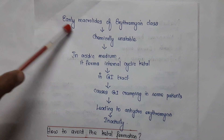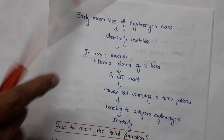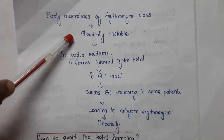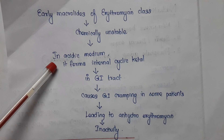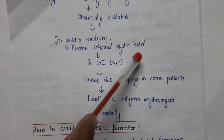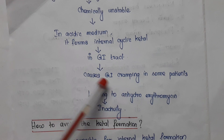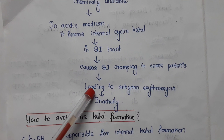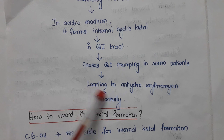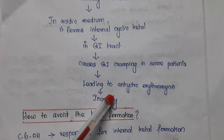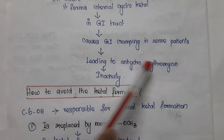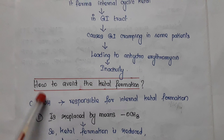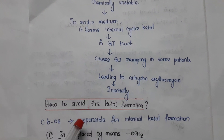Macrolides of the erythromycin class are chemically unstable. In acidic medium, erythromycin forms internal cyclic ketal in the GIT and causes GI cramping in some patients, leading to anhydroerythromycin, which is an inactive spiro-ketal derivative. Now we will see how we can avoid ketal formation.